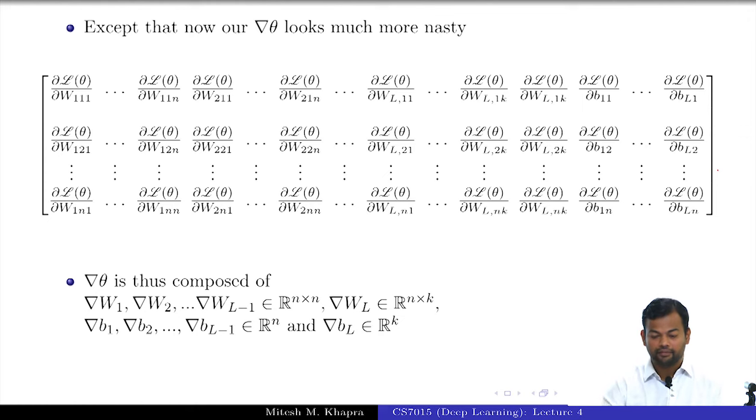Now if someone gives you each of these quantities—some oracle gives you each of these quantities—then can you apply gradient descent? You can use exactly the same algorithm that you were using earlier; just the sizes of all your vectors changes. How many of you are convinced that you can use gradient descent?